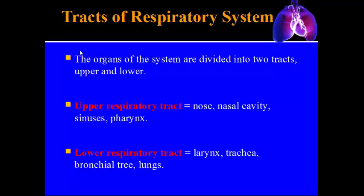Next we'll talk about the various tracts of the respiratory system. The organs are divided into the upper respiratory tract and the lower respiratory tract. The upper includes the nose, the nasal cavity, the sinuses, and the pharynx. Anything below that — the larynx, the trachea, the bronchial tree, and the lungs — is considered the lower respiratory tract.